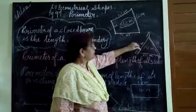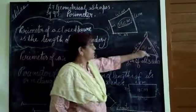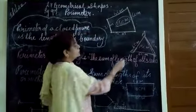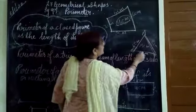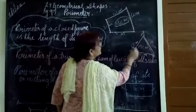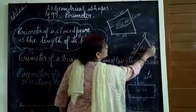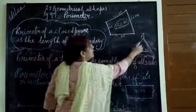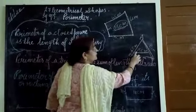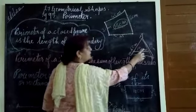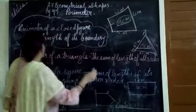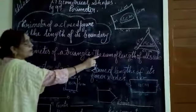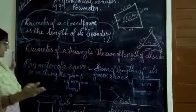The boundary is the three sides of this triangle — it has three sides only. So we add the sum and get the total. 6 plus 4 is 10, plus 5 is 15. So the perimeter of this triangle is 15 centimetres. Perimeter of a triangle is the sum of the lengths of its three sides.